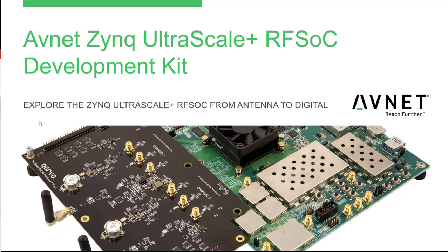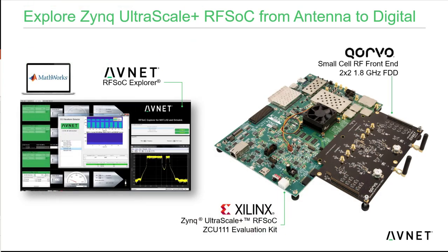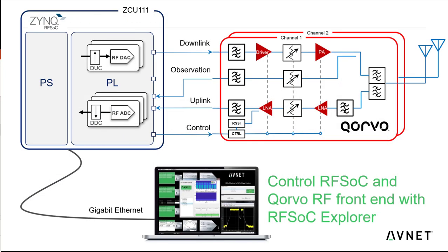Hello, welcome to this introduction to the Avnet Zynq UltraScale+ RF SOC development kit. The RF SOC development kit has been designed to enable system architects to explore the entire signal chain from the antenna to the digital baseband processing. This includes the Xilinx Zynq UltraScale+ RF SOC, MathWorks model-based design tools, and a Quovo RF front end card. This combination enables system architects to use the RF SOC gigasample data converters and perform analysis natively in MATLAB and Simulink using Avnet's RF SOC Explorer.